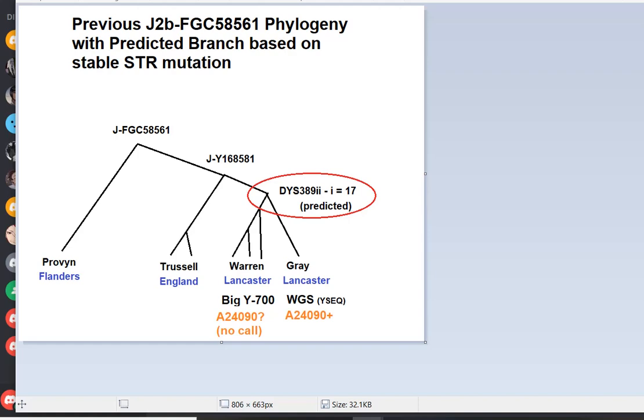Now I'll show you what the Y-Full tree looked like after we did some NGS tests. The two guys that I thought should find some SNP to show that they were more closely related to each other, based on their rare DYS389II-I allele, ended up not finding such a SNP. So the tree was flat. It just said Trussell is equally distantly related to Warren, is equally distantly related to Gray. There was no SNP showing that Warren and Gray were more closely related.